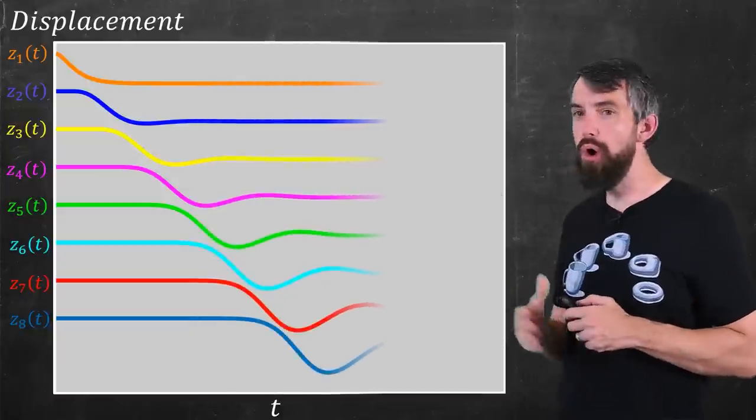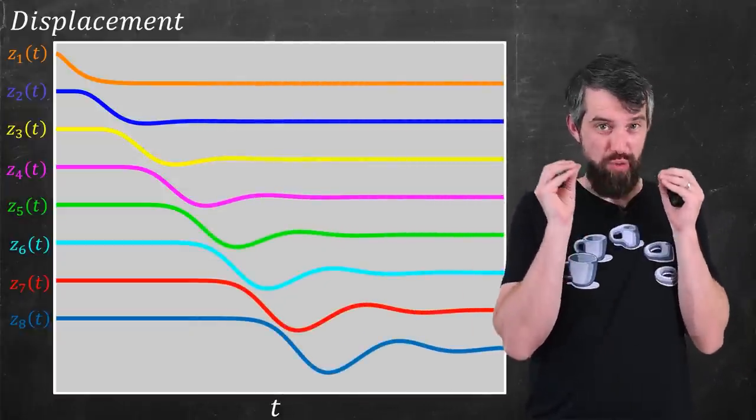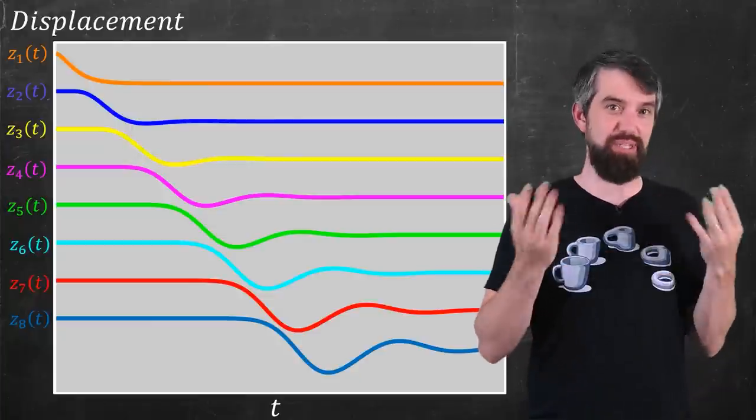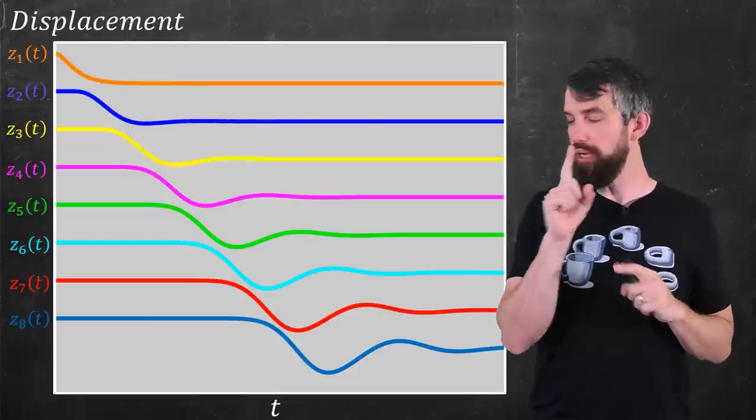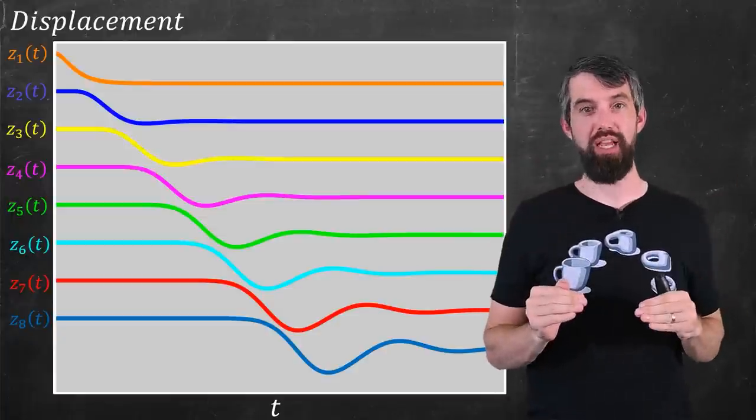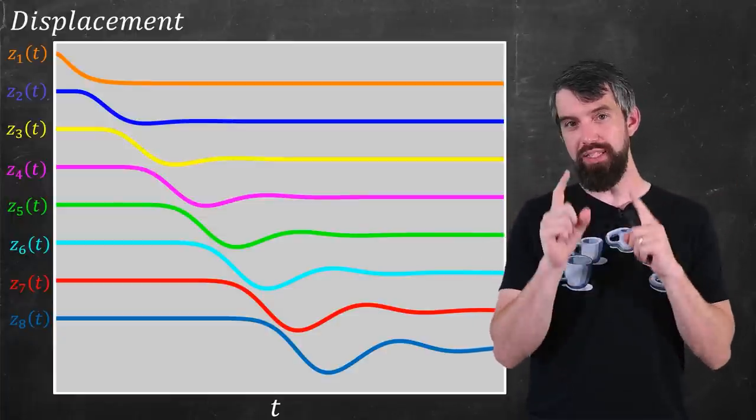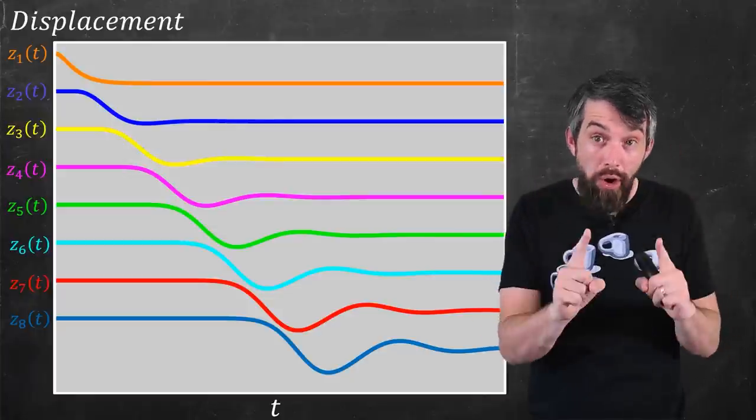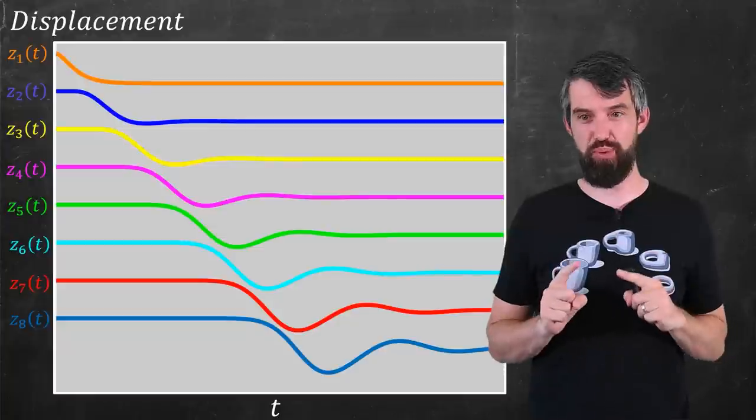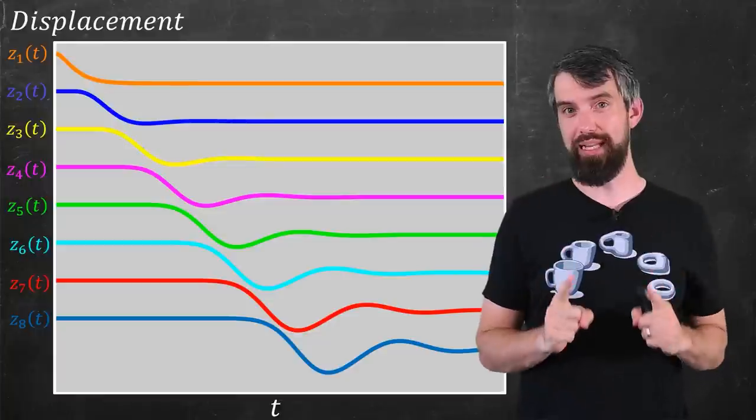This is the graph of displacement as a function of time. And what you can notice is that as time goes on, the first car, the z_1 in orange, it dips down a little bit because of that braking. But look at what happens to the dips as you go down the chain of cars. Look, for example, at that blue z_8 at the bottom. This is a dip that is larger than the initial dips were going to be, and then starts doing some oscillations.